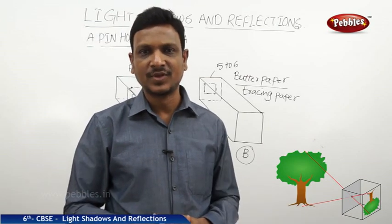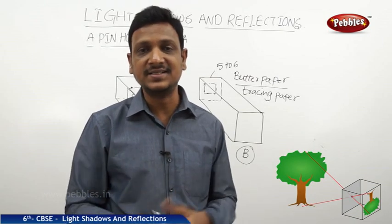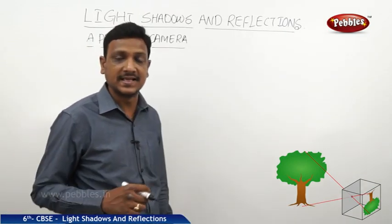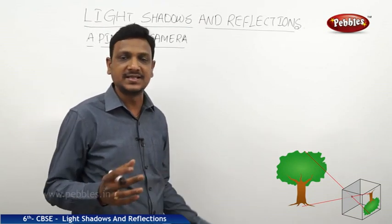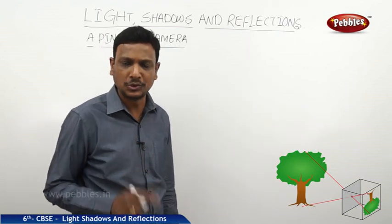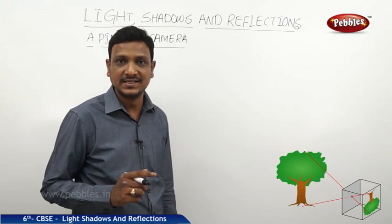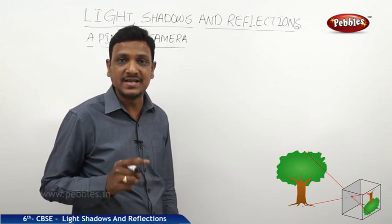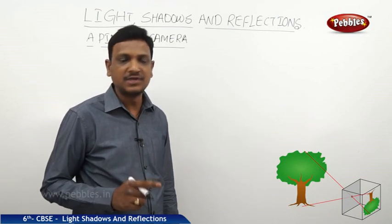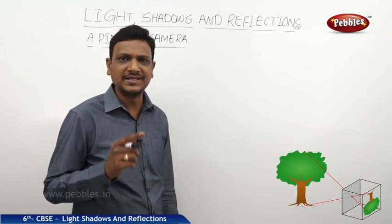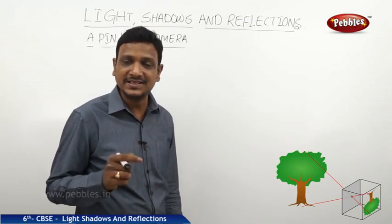We can also observe the sun and an eclipse using this simple device — not by directly looking at the sun. We cannot see the sun directly; it is very dangerous. Never attempt to look at the sun directly — the bright sunlight may damage your eyes. If somebody wants to observe an eclipse, here is a very simple and easy way by which you can safely observe the eclipse and see the sun.